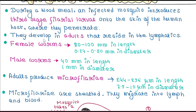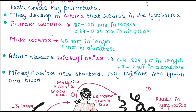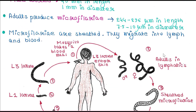These larvae develop into adults that reside in the lymphatics. These are male and female adults. The female worms are 80 to 100 mm in length and 0.242 to 0.30 mm in diameter, and male worms are 40 mm in length and 1 mm in diameter.